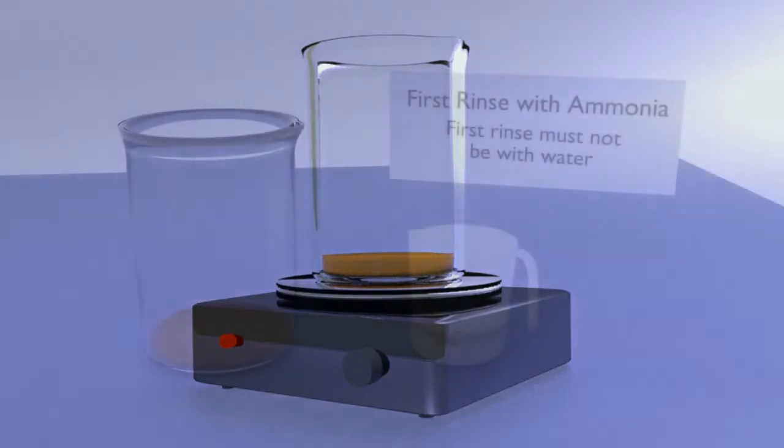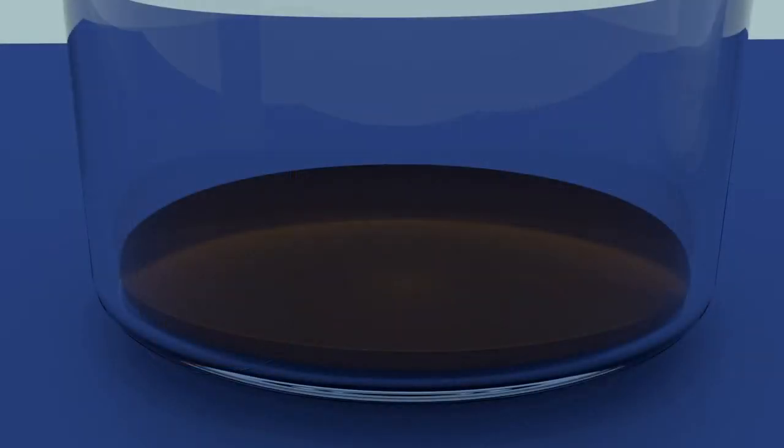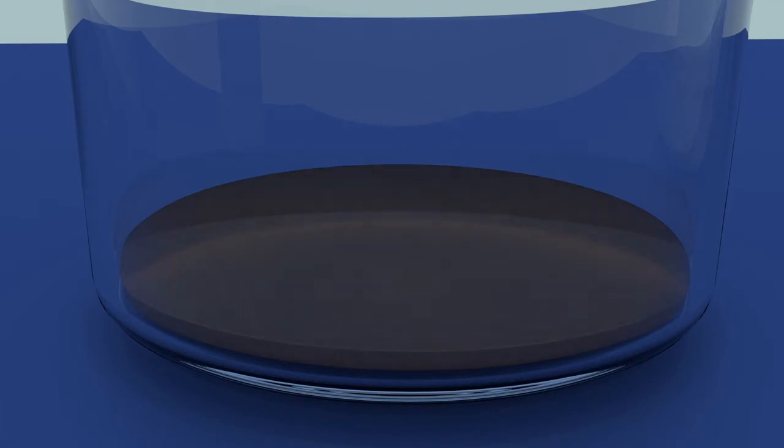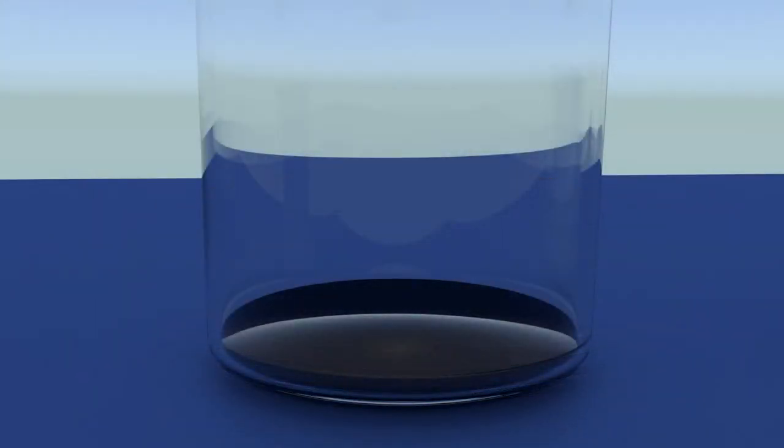For the first rinse only, ammonia, not water, must be used. The reason is this: if the first rinse is with water, copper hydroxide can precipitate, coating and contaminating the gold with a white sticky substance. Add at least enough ammonia to cover your gold mud.